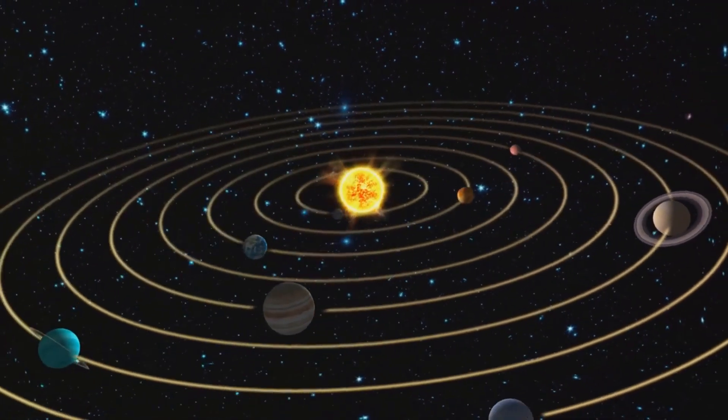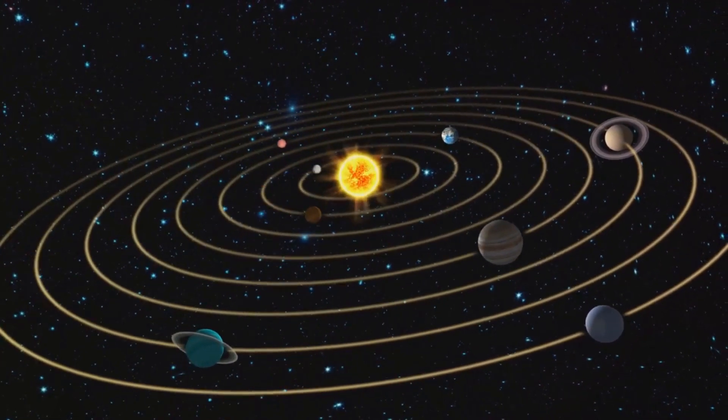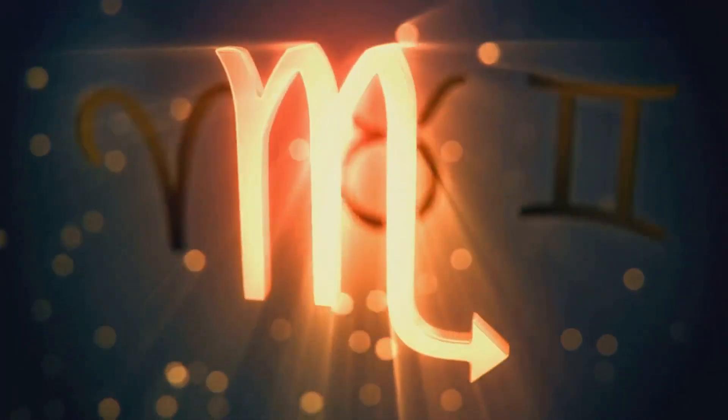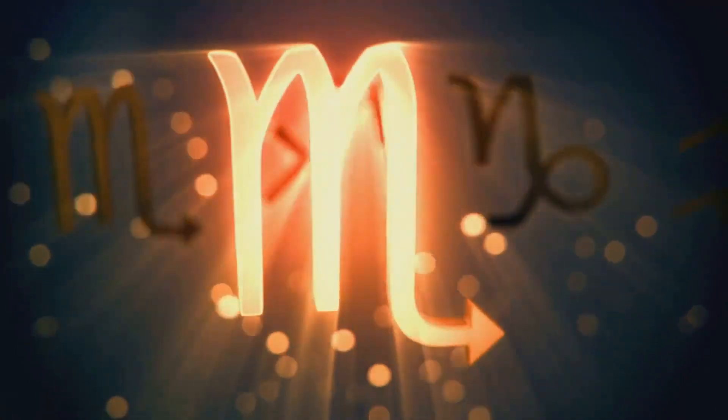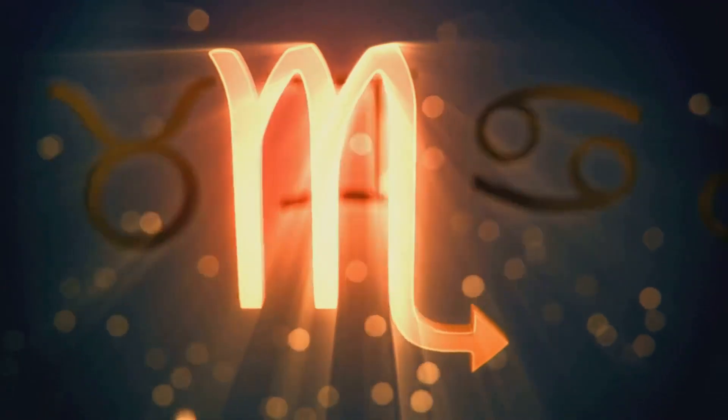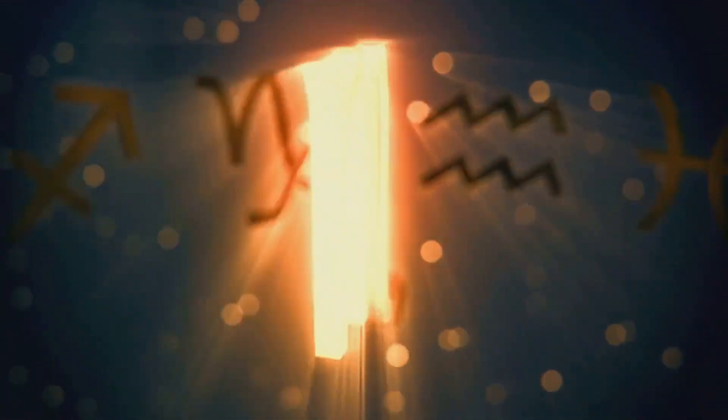Then, turn your gaze to the planets. Each planet represents a different facet of your personality and life. From the sun, which symbolizes your core self and ego, to the moon, which reflects your emotions and inner self, each planet has a unique story to tell. Learning about the zodiac signs is another crucial step. Each sign has its own strengths, weaknesses, and qualities. By understanding your sun, moon, and rising signs, you can gain a deeper understanding of your motivations, behaviors, and life purpose.